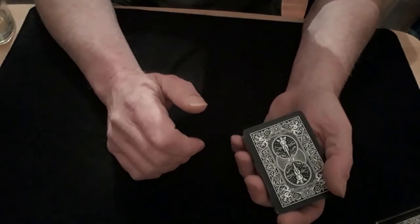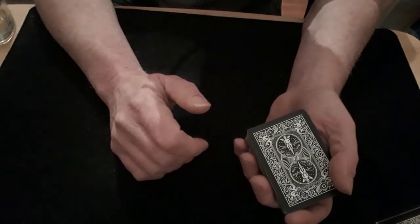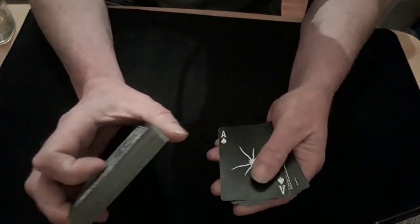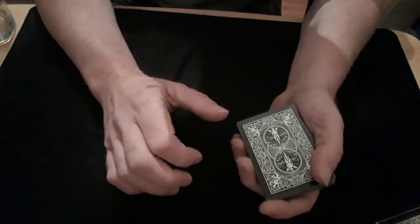That should put you with the three choices on the bottom facing down and then your face up crimped card. As you are then talking to them, you're going to get a break on your crimp, pull your crimp down, so you're getting a break underneath the bottom four cards basically.